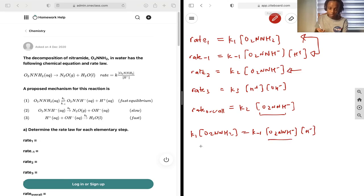And then we just isolate for this, and we get O2NNH minus is equal to k1 O2NNH2 over k minus 1.